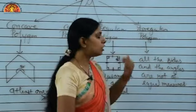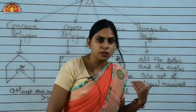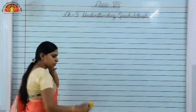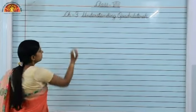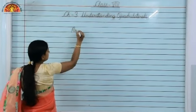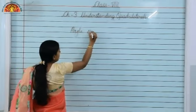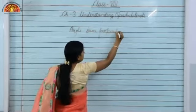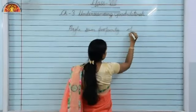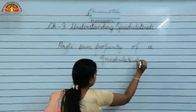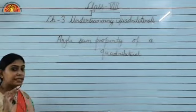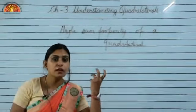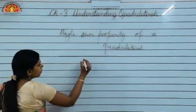This is what all about the polygon. Now let us move to another topic — the angle sum property of a quadrilateral. As you know, quadrilateral means a polygon with four sides.